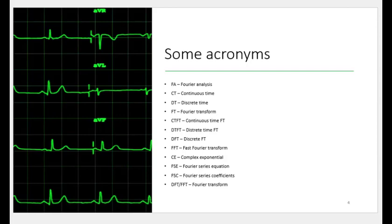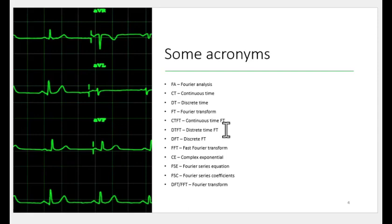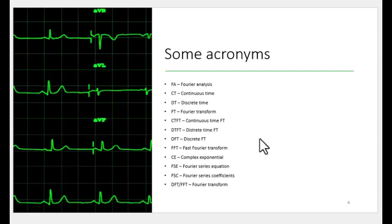Some acronyms I'll be using: FA for Fourier analysis, which includes both Fourier series and Fourier transform; CT for continuous time; DT for discrete time; FT for Fourier transform; CTFT for continuous time Fourier transform; DTFT for discrete time Fourier transform; DFT for discrete Fourier transform; CE for complex exponential; and FSC for Fourier series coefficients.